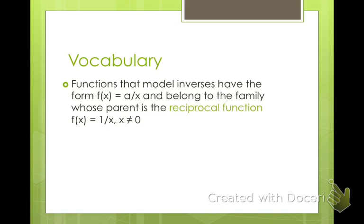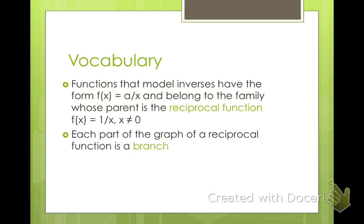So vocabulary. Functions that model inverses have the form f(x) equals a divided by x and belong to the family whose parent is the reciprocal function. So 1 over x is just our reciprocal function. Each part of the graph of a reciprocal function is a branch. We have two branches to reciprocal functions.